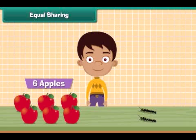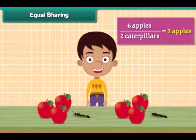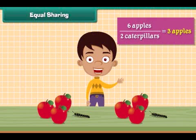If there are six apples and two caterpillars, each caterpillar will get three apples. Six apples divided by two is equal to three apples each.